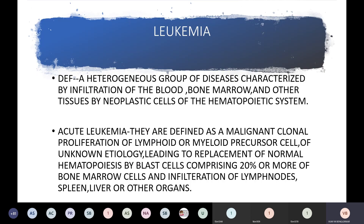Leukemia is a heterogeneous group of diseases characterized by infiltration of blood, bone marrow and other tissues by neoplastic cells of the hematopoietic system. There is either immature or matured cells increasing in number seen in the blood and bone marrow.